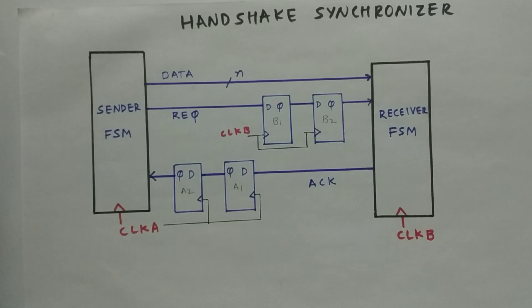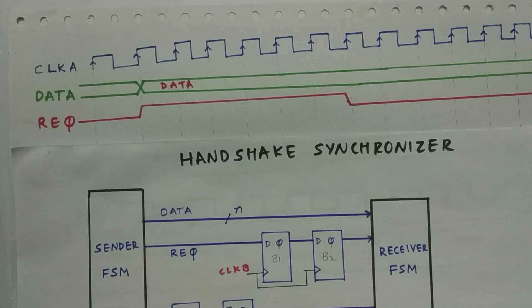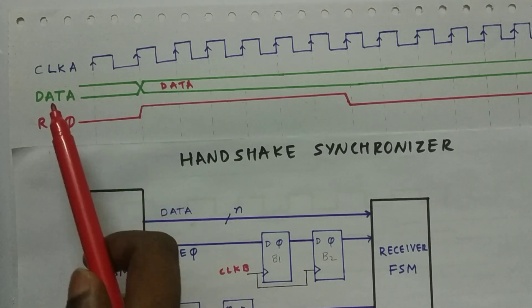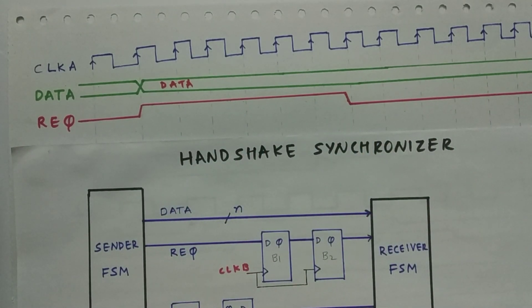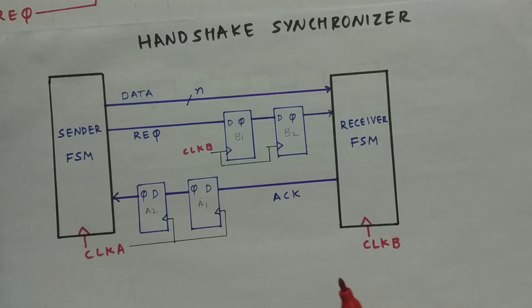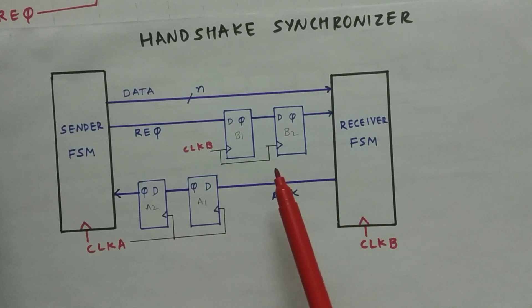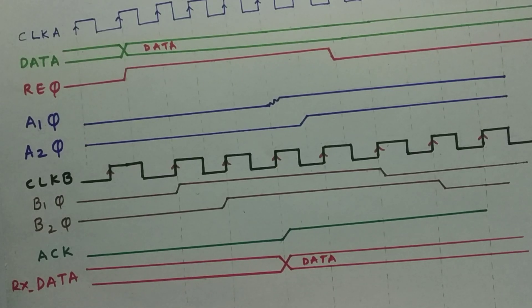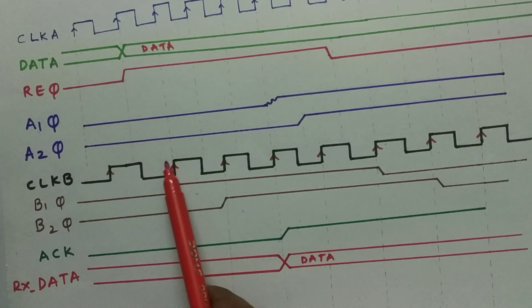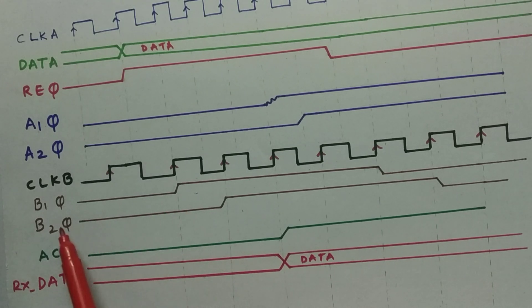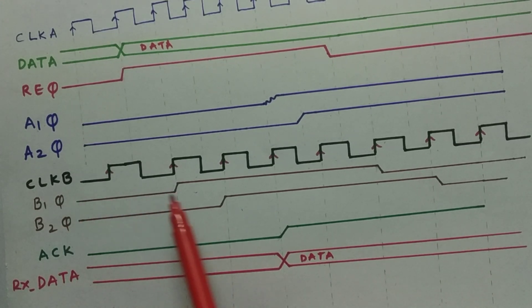Now let's look at the timing diagrams for better understanding. We have clock A, and we are sending data along with the request signal. The data is stable until we get an ACK signal. This request is passed to a two-flop synchronizer running on clock domain B. We can see the outputs B1Q going high, followed by B2Q going high on the next clock edge, since there is one flop between B1Q and B2Q.